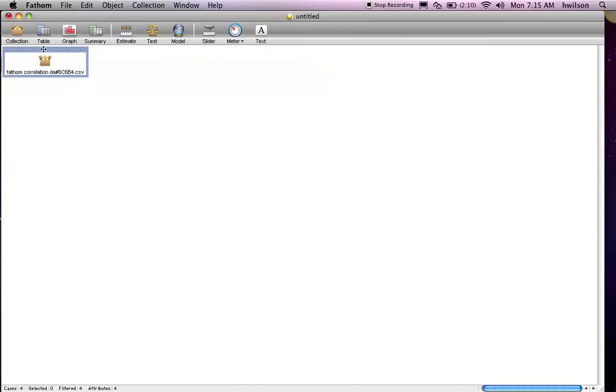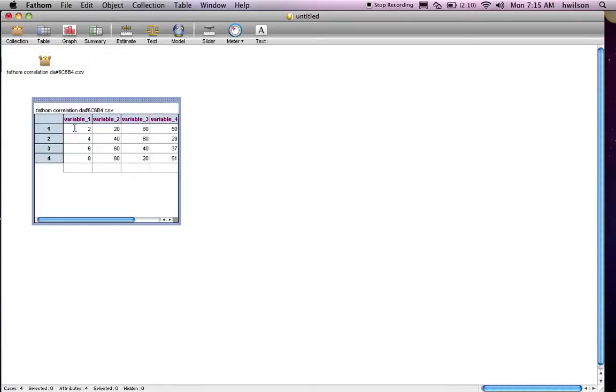So now Fathom creates a collection of the data. Let's look at the data by selecting Table, and you can see the data is organized in Data Table. So now what we're going to do is we're going to calculate the correlation between variables.